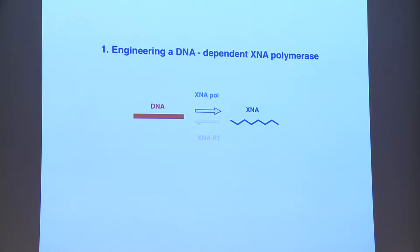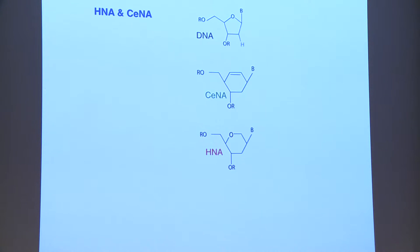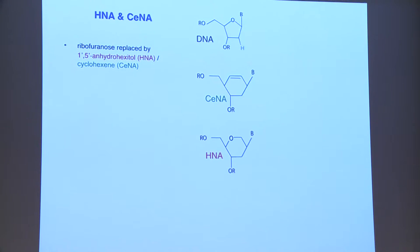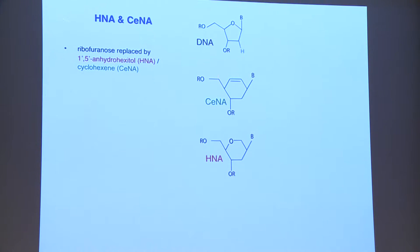Step one: we need an XNA polymerase to go from DNA to XNA. The XNAs we started with are HNA and CNA, where the five-membered ribofuranose ring of DNA and RNA is replaced with a six-membered ring — cyclohexenyl in CNA and hydrohexetol in HNA.